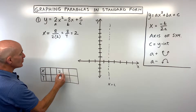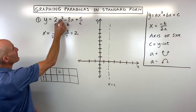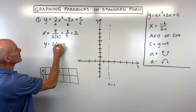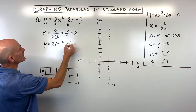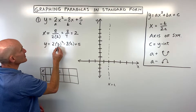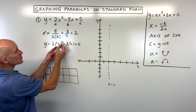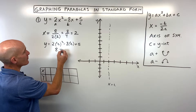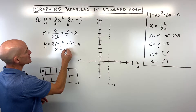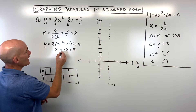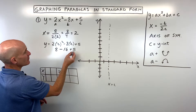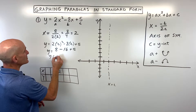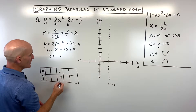We take that 2 and plug it back in for x to solve for the y-coordinate of the vertex. So 2 squared is 4, times 2 is 8. Make sure you follow your PEMDAS, your order of operations. 8 times 2 is 16. 8 minus 16 is negative 8, plus 5 is negative 3. So y is equal to negative 3.